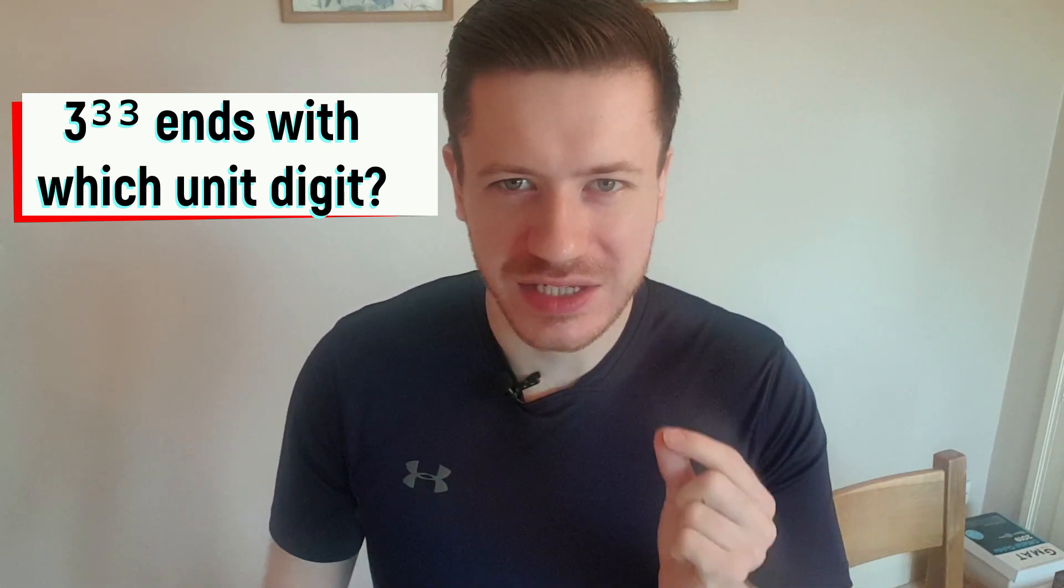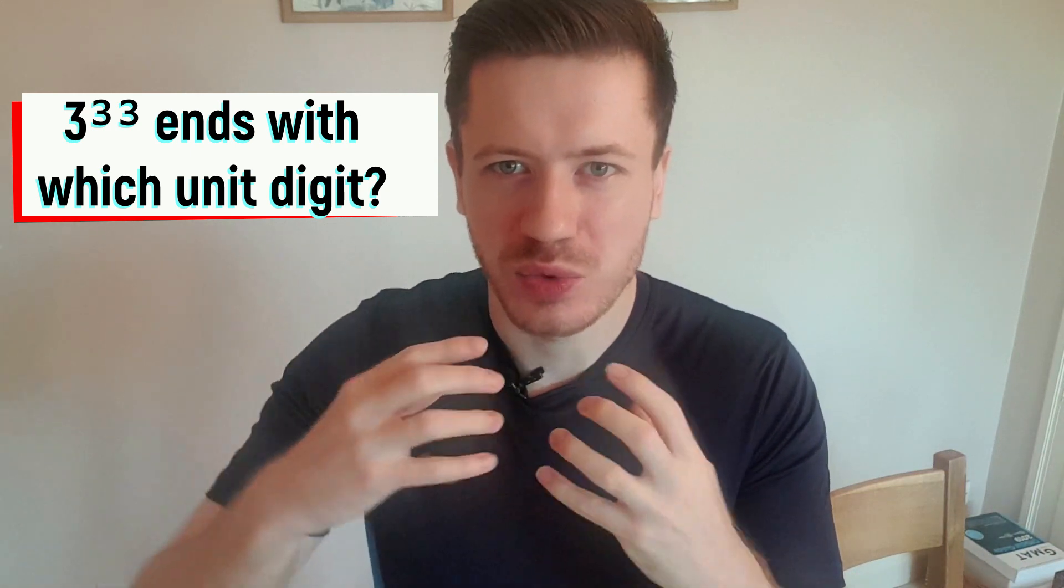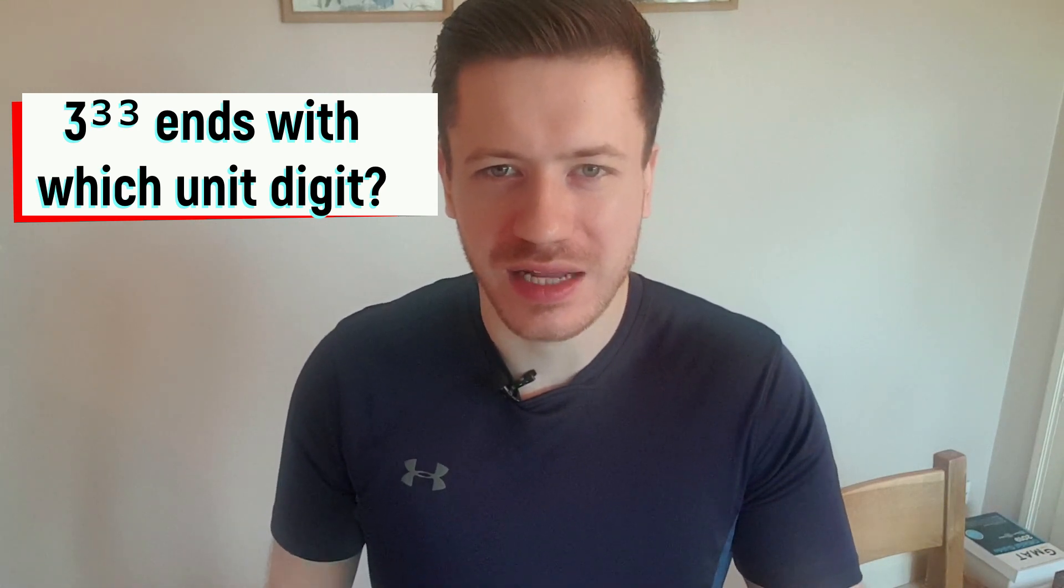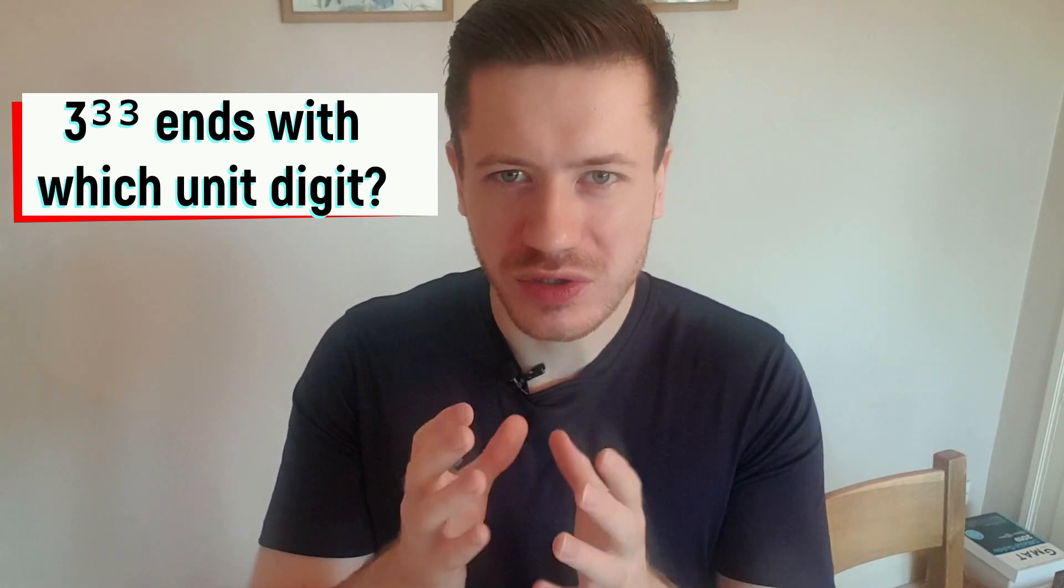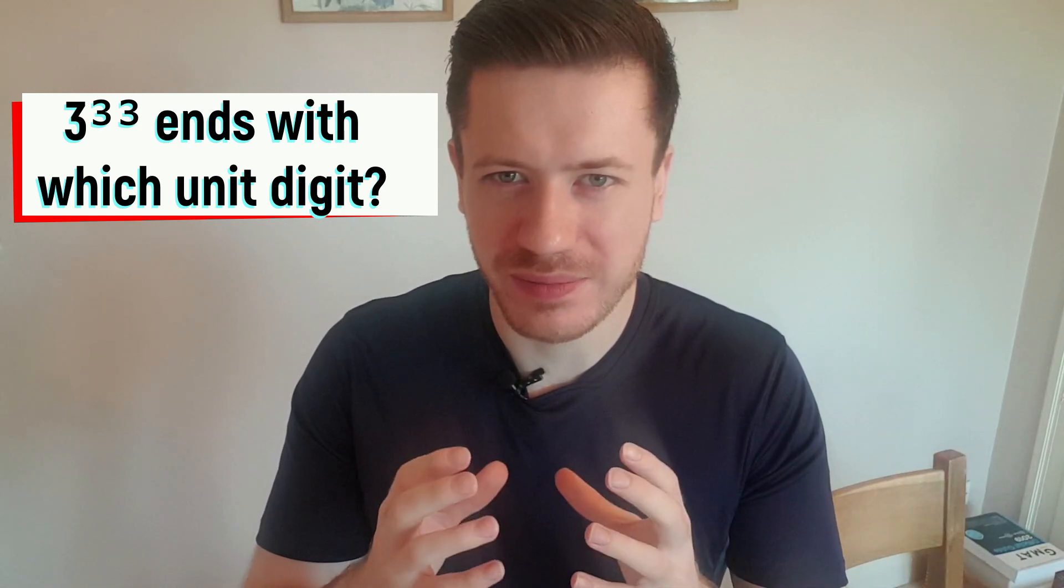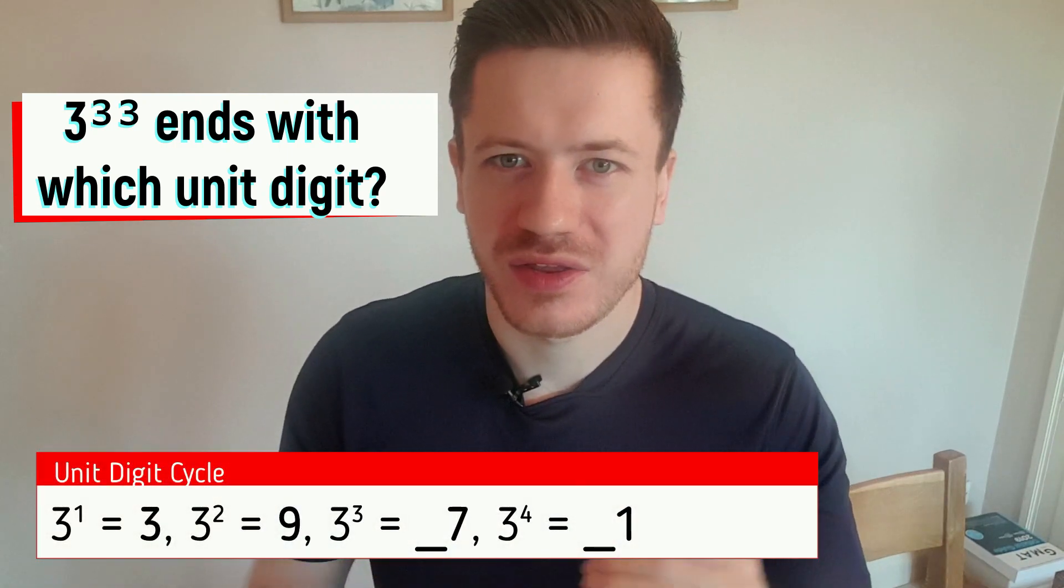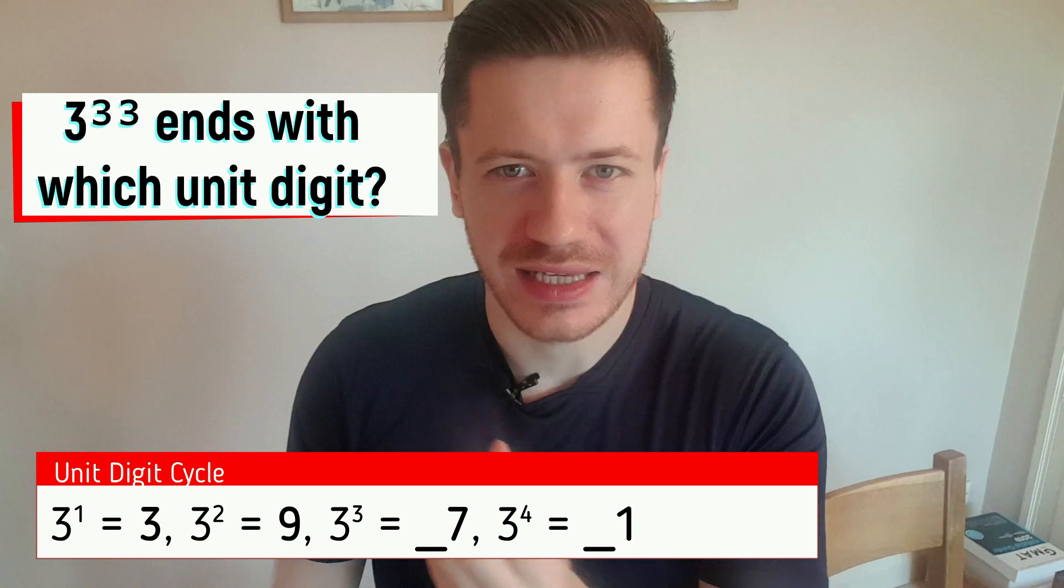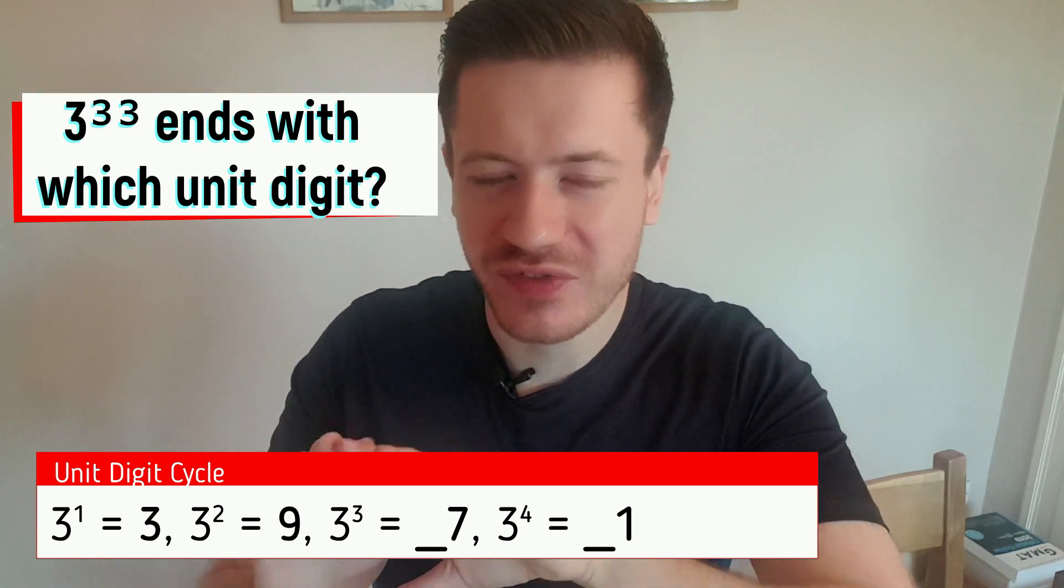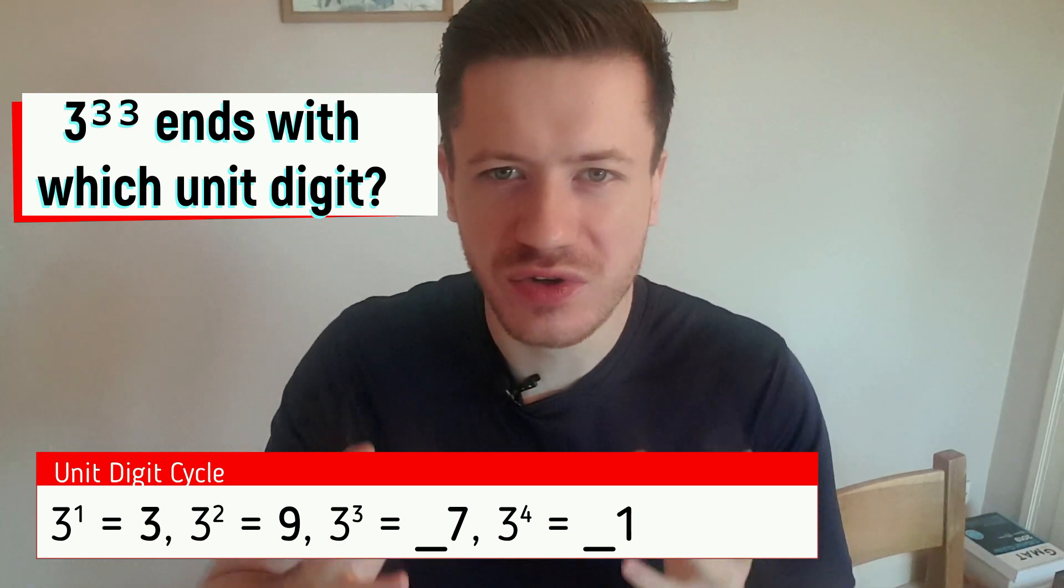Every single digit from zero to nine goes in certain cycles when you raise them in powers. Let's take the number three, as in this question. You can write this down, and you'll always see it on the screen, but it's very useful to remember. Three to the power of one is, of course, three. Three to the power of two is nine. Three to the power of three is 27. But forget the two, forget the 20. Just focus on that seven. Just focus on the units digit.